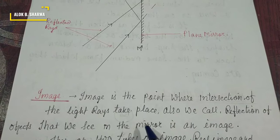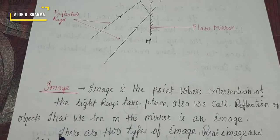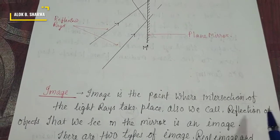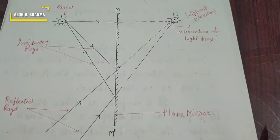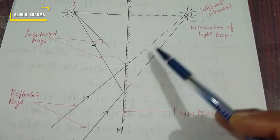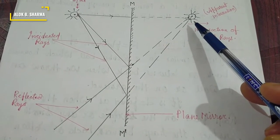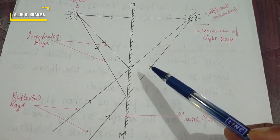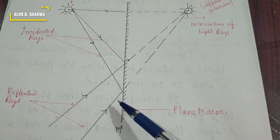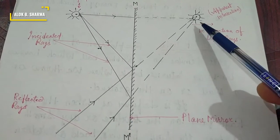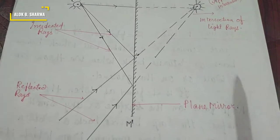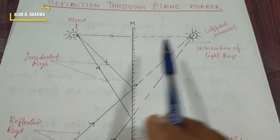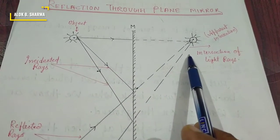An image is the point where the intersection of light rays takes place after reflection — either actual or apparent intersection. We also call it the reflection of the object that we see in the mirror. The object is what we place in front, and its reflection seen in the mirror is the image.